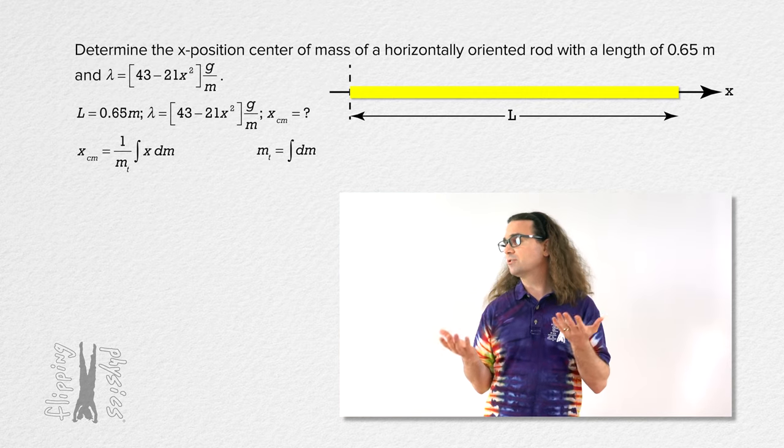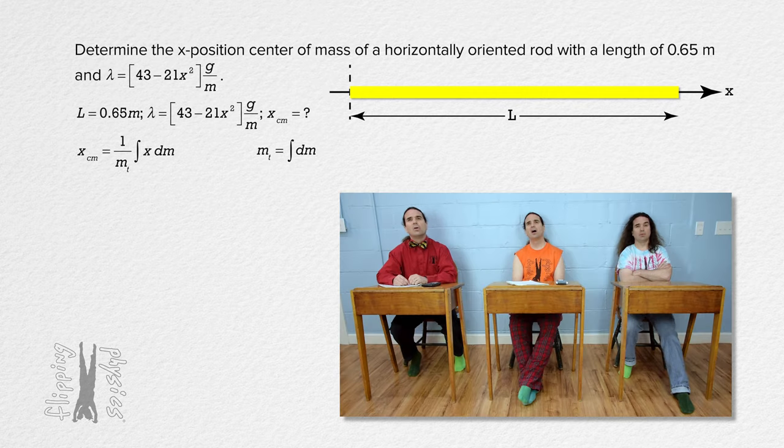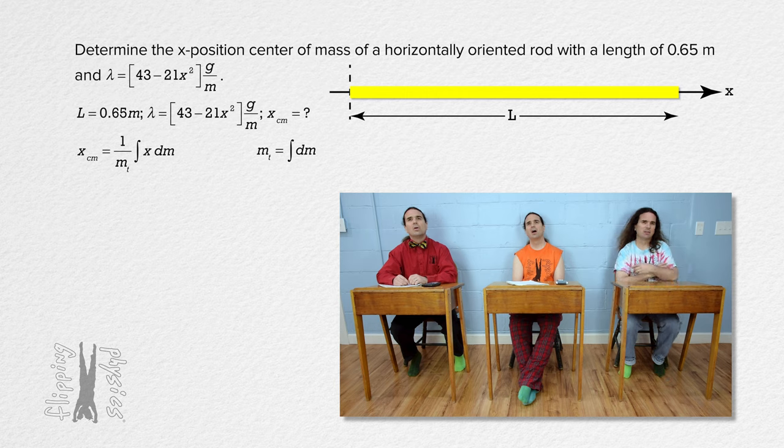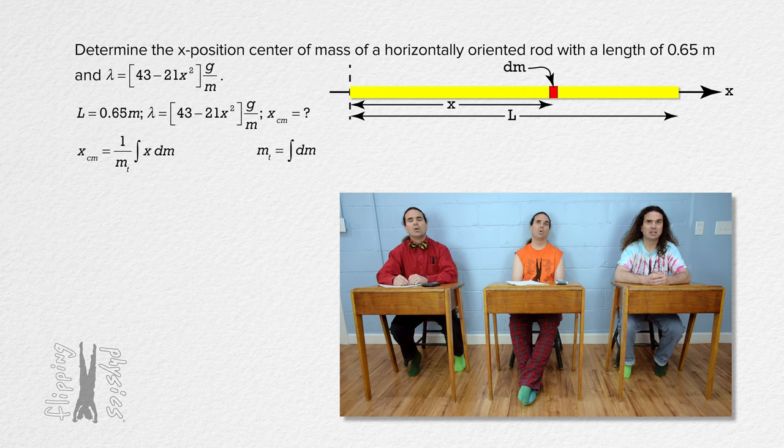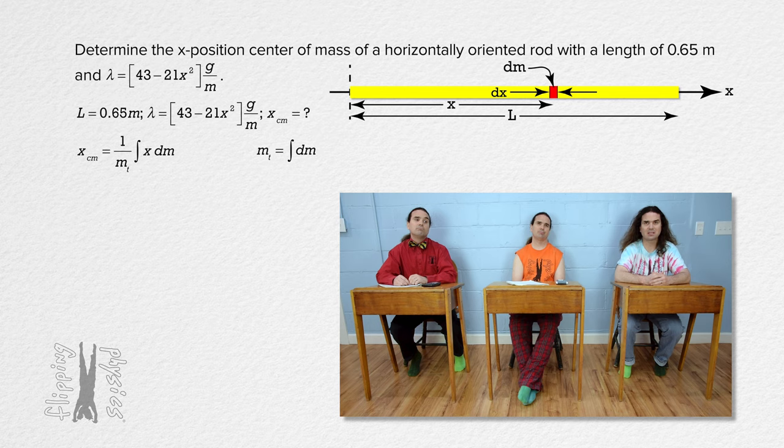Bo, how are we going to do this? This is similar to what we did last time. We need to consider the rod to be made up of an infinite number of infinitesimally small objects dm. Each piece dm is going to be located a variable distance x from the left end of the rod. Each piece dm will have an infinitesimally small width dx. Do not forget to use lambda, the linear mass density.